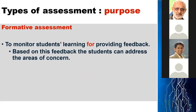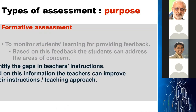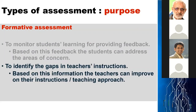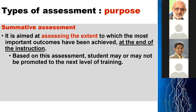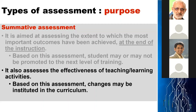Formative assessment monitors students' learning by providing feedback. Based on this feedback, students can address areas of concern. It also identifies gaps in teachers' instructions, allowing teachers to improve their teaching approaches. Summative assessment aims to assess the extent to which the most important outcomes have been achieved at the end of instruction. Based on this assessment, students may or may not be promoted to the next level of training. It also assesses the effectiveness of teaching-learning activities, and based on this, changes may be instituted in the curriculum.